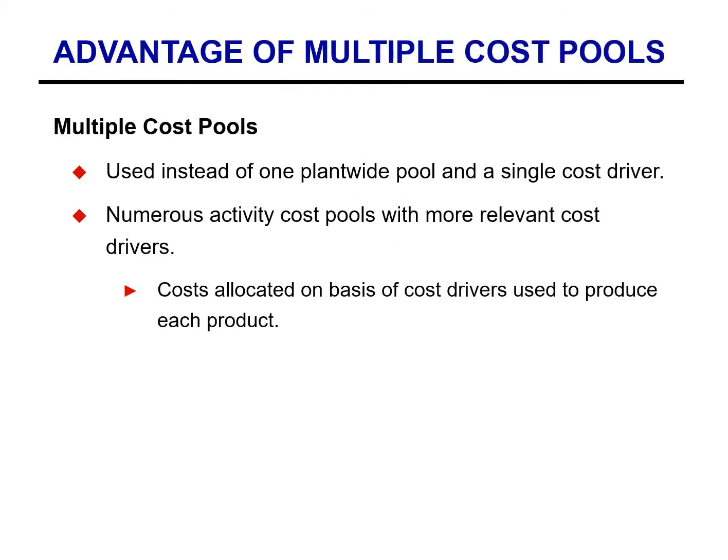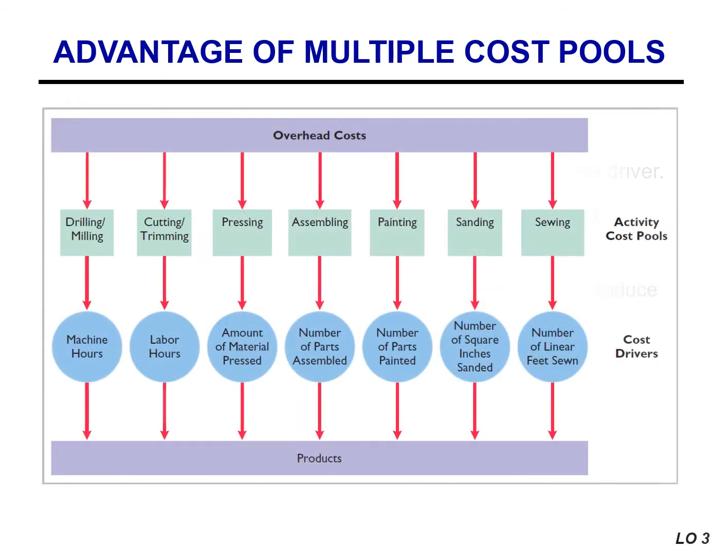ABC increases product cost accuracy because it uses multiple cost pools. Instead of one plant-wide pool and a single cost driver, companies use numerous activity cost pools with more relevant cost drivers. In the Atlas company example,